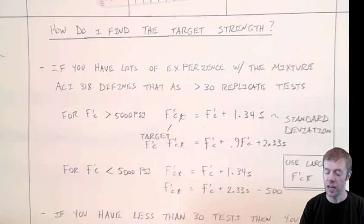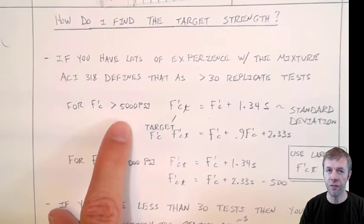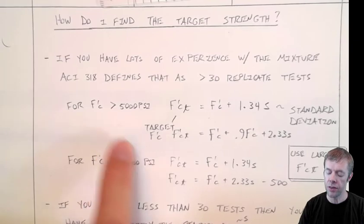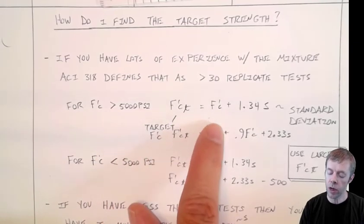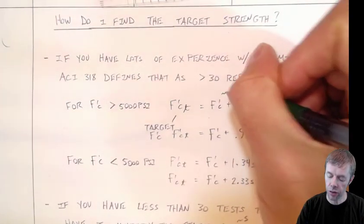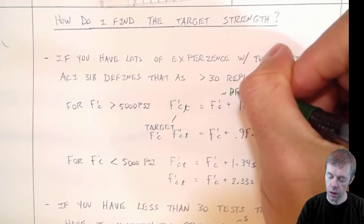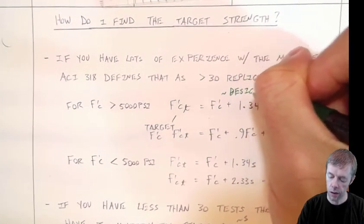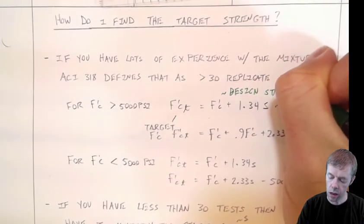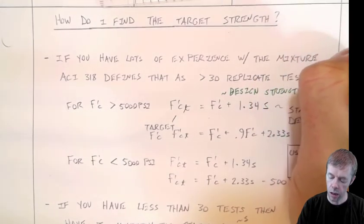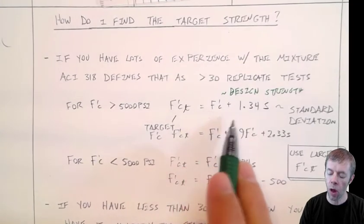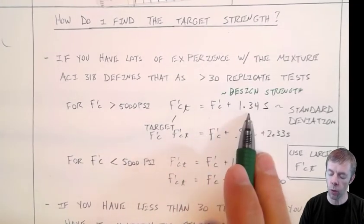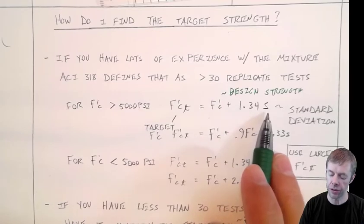If you have that, then you use these equations. If you're designing for a concrete with greater than 5,000 psi, then F'CT, that's your target strength, is going to be, this is your design strength plus 1.34 times your standard deviation.